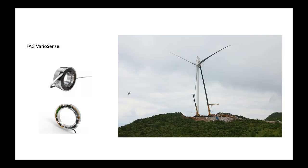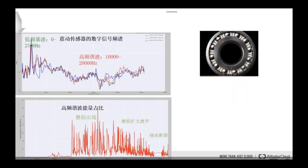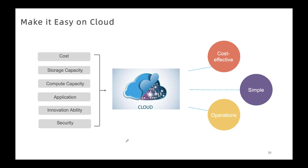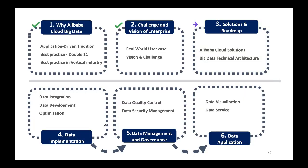For wind turbines, we deploy sensors in the bearings to detect abnormal signals early, before the whole device breaks down — saving significant maintenance costs by replacing small parts proactively. In summary, common enterprise challenges include cost, lack of storage and compute capacity, inability to innovate due to infrastructure complexity, and security concerns.